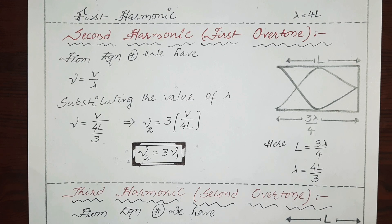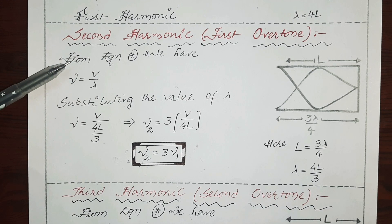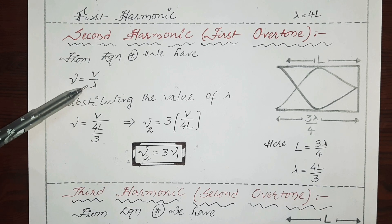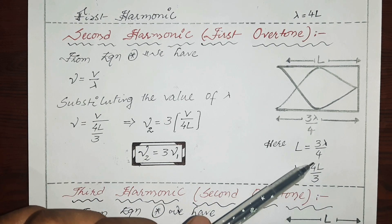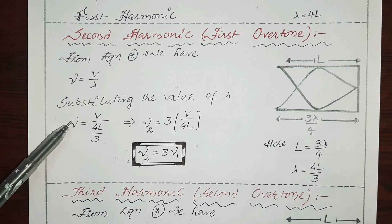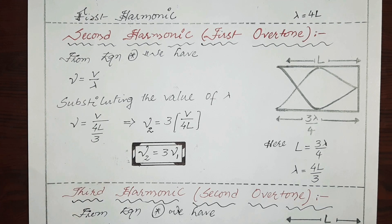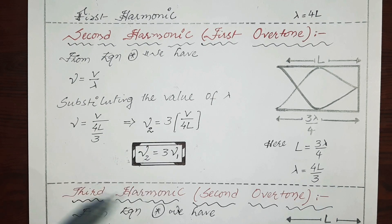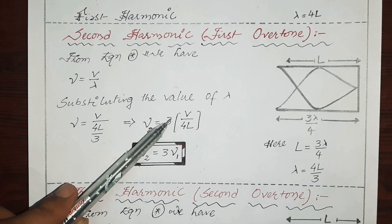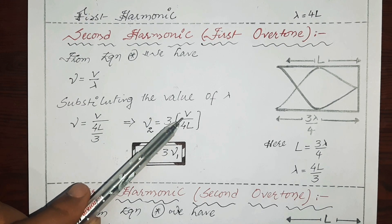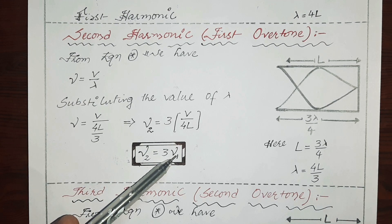So if I try to find lambda, that is equals to 4L by 3, as the 3 by 4 becomes 4 by 3 when transposed. So finally I have lambda equals 4L by 3. This lambda value is useful in finding the frequency in the case of second harmonic. From the universal wave equation, substituting the value of lambda as 4L by 3, nu equals V divided by 4L by 3. This gives nu_2, the second harmonic, equals 3 times of V by 4L. Since V by 4L is the first harmonic nu_1, the second harmonic is 3 times the first harmonic.